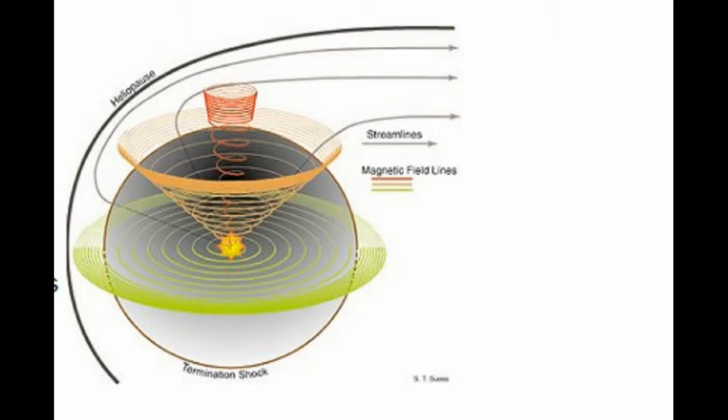Slight chance of flares. Sunspot R1934 has a beta-gamma magnetic field that harbors energy for M-class solar flares. Because the region is directly facing Earth, any flares today would surely be geo-effective. The sunspot has been relatively quiet for days, however, so NOAA forecasters are estimating only a 25% chance of M-flares.